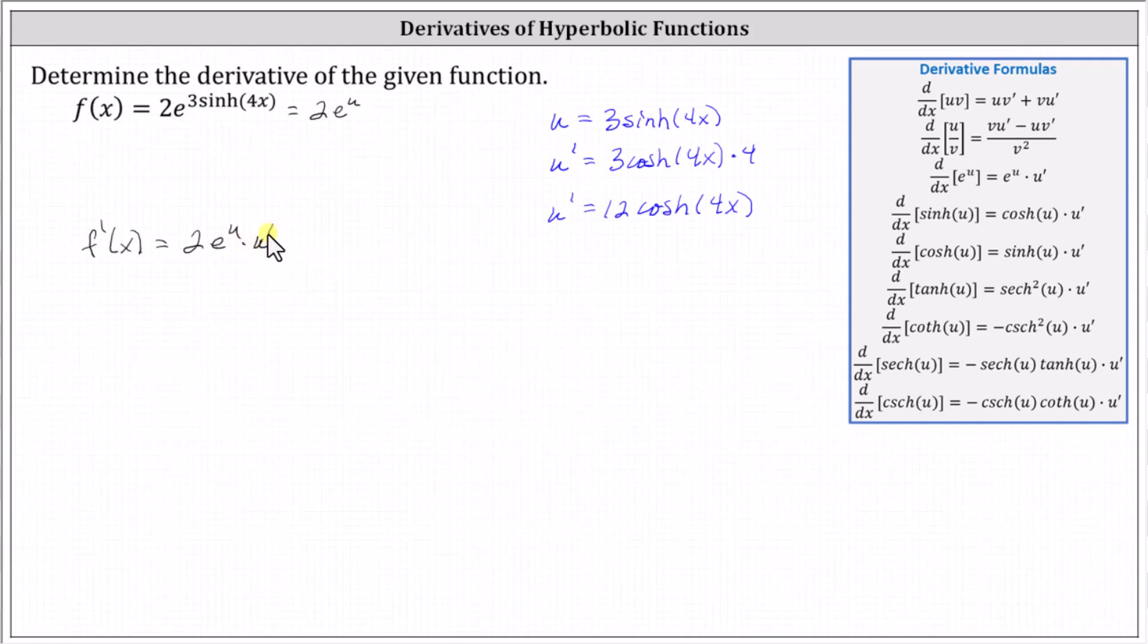Now we substitute three hyperbolic sine four x for u and 12 hyperbolic cosine four x for u prime, which gives us two times e raised to the power of three hyperbolic sine four x times u prime, which is 12 hyperbolic cosine four x.